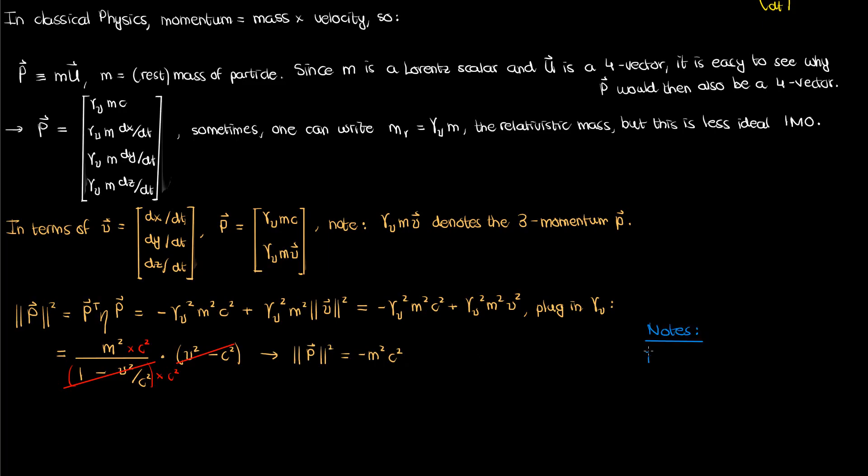This magnitude squared is a Lorentz scalar because the mass m is a Lorentz scalar and the speed of light c is a Lorentz scalar. And that's what we want from a four-vector. We want its magnitude squared to be a Lorentz scalar. In addition, because the magnitude squared is negative, this means that by definition, the four-momentum is a time-like four-vector.